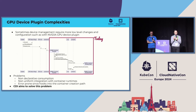Here's an example CDI spec for an NVIDIA GPU on a single-GPU system. Under the devices section, there's one entry called gpu0. Container edits include device nodes — like the NVIDIA character device — and mounts, such as driver libraries like libcuda, specifying both the host path and the mount path inside the container. It also includes container lifecycle hooks, such as updating the LD cache so the main process can automatically discover the driver libraries at runtime.